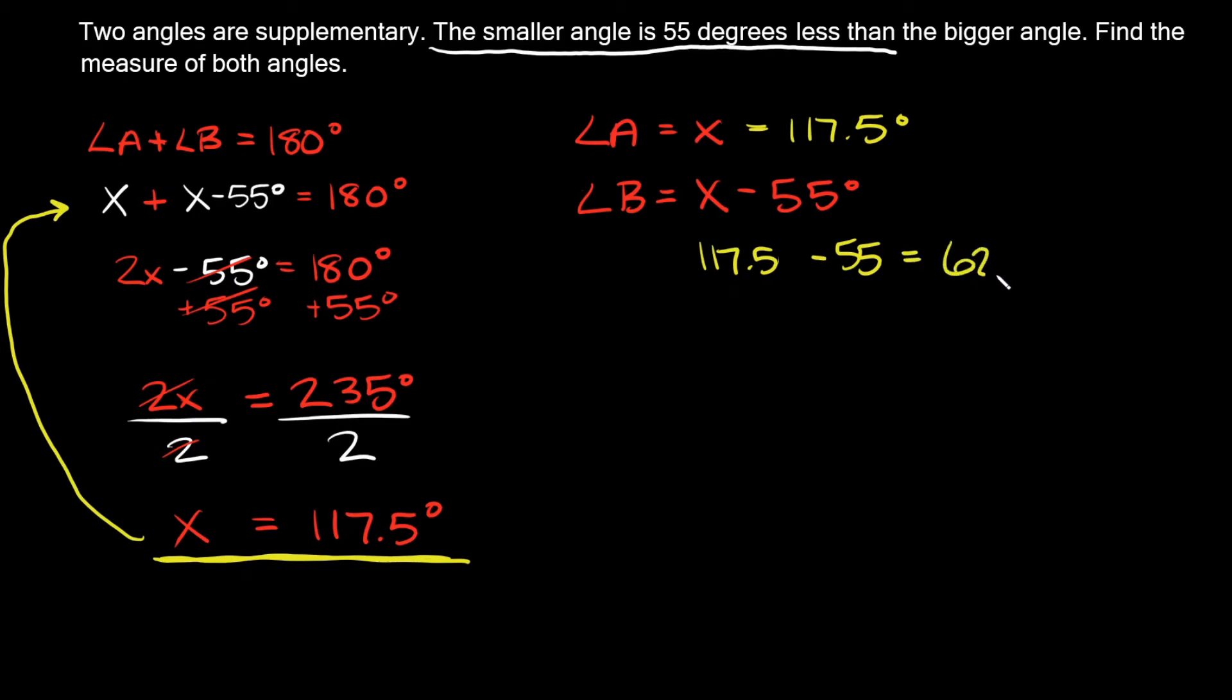Now remember angle A and angle B are supplementary. That means when you add them up they should add up to 180 degrees. So if we add up our answers now, 117.5 degrees plus angle B, which is 62.5, well that's equal to 180 degrees. So since they add up to 180 degrees we know we did it right.